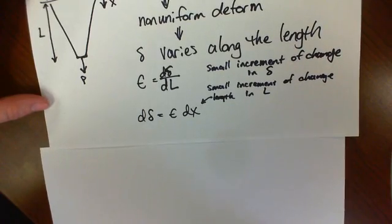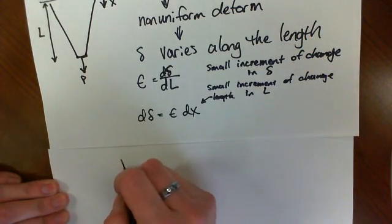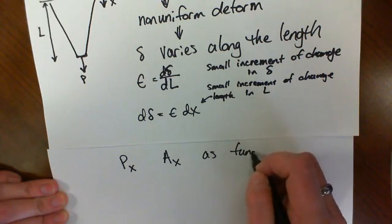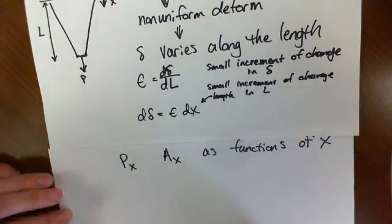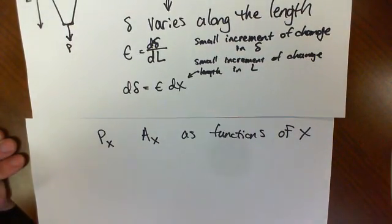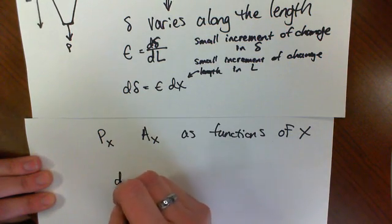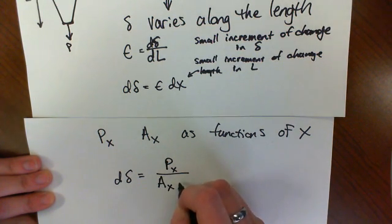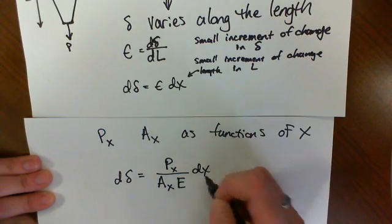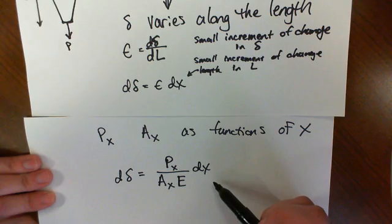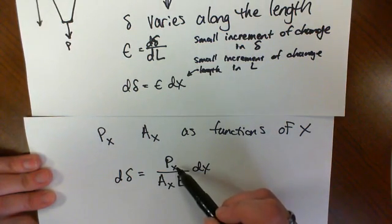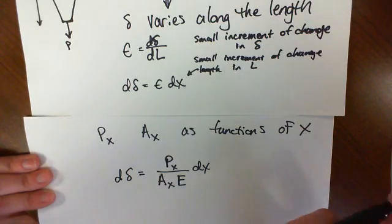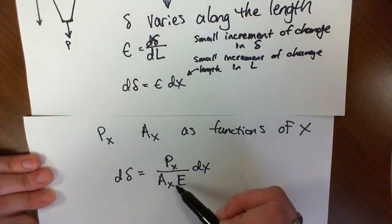So looking at this, we can treat P and A as functions of x. In general terms, we can treat P as a function of x and A as a function of x. Then we can write dδ equals P(x) over A(x)E times dx. I've just replaced the L in our PL/AE with dx. And now we can write P(x) as a function of x so it would have x in there, and A as a function of x so it would have an equation of A that's described by x.